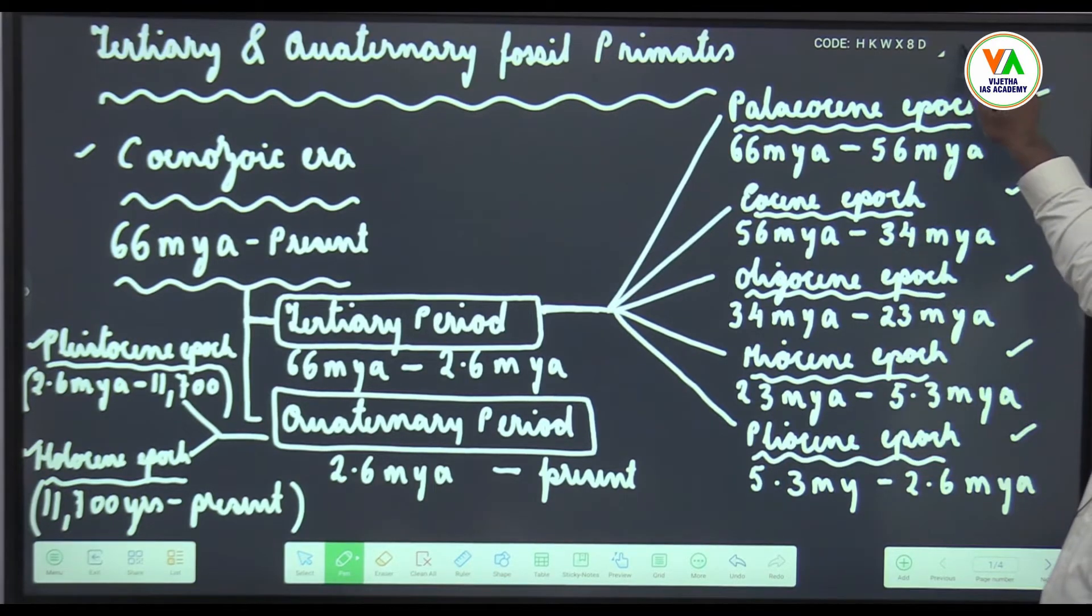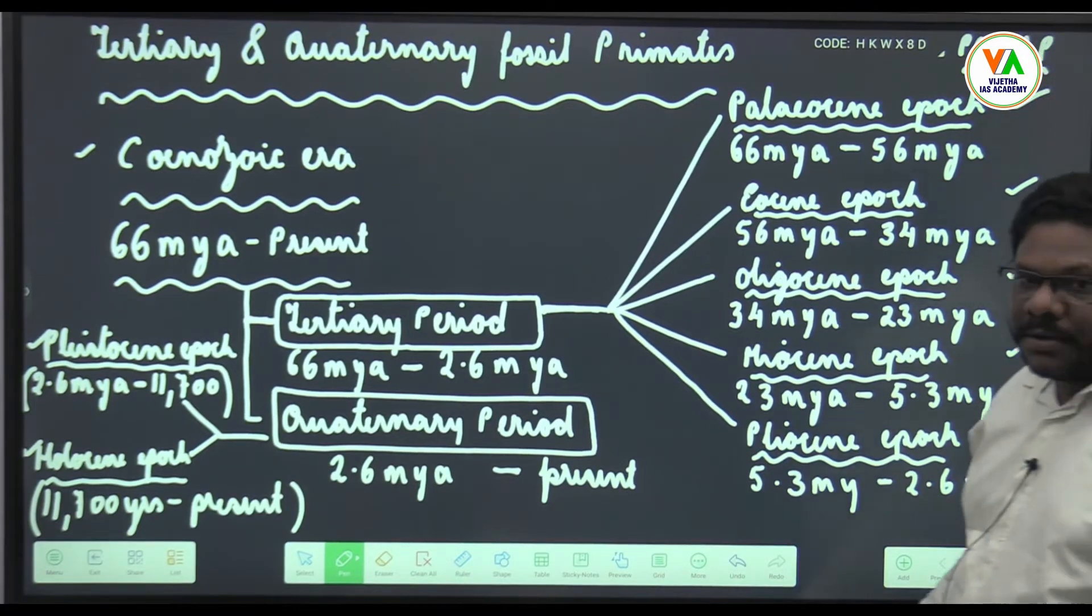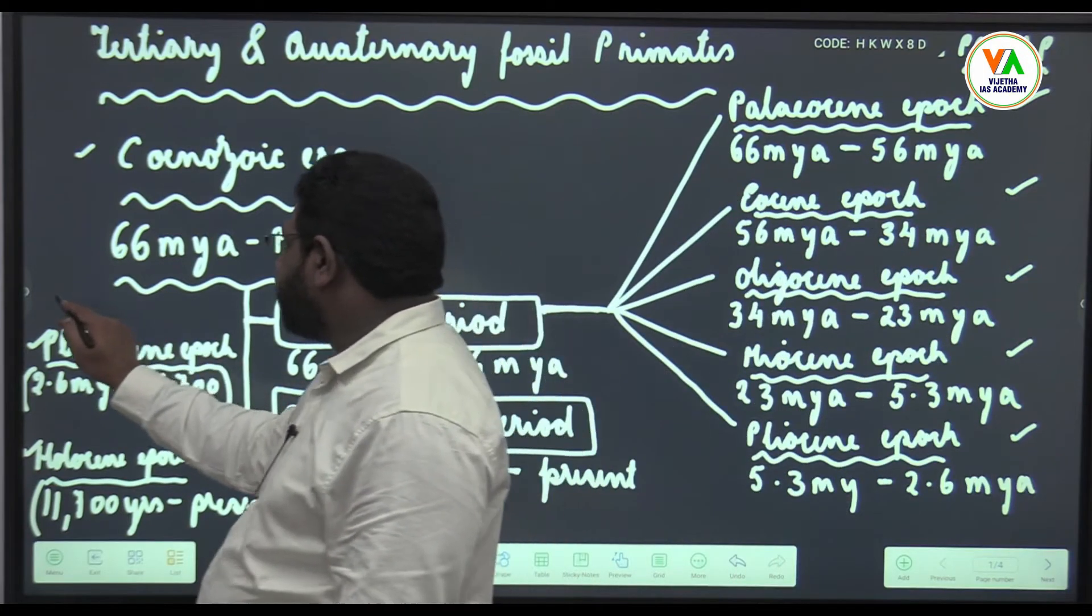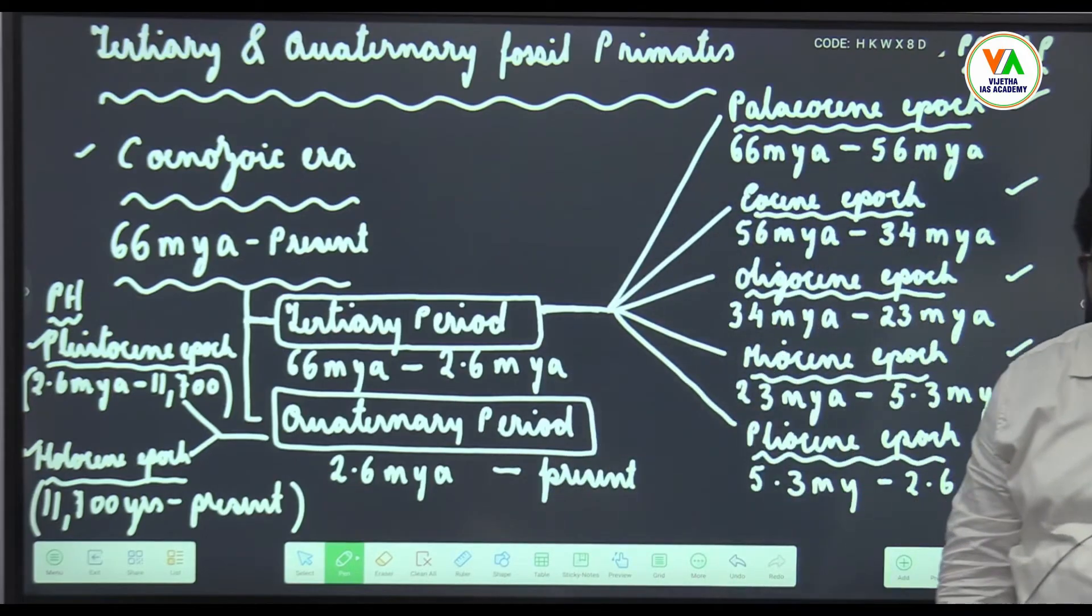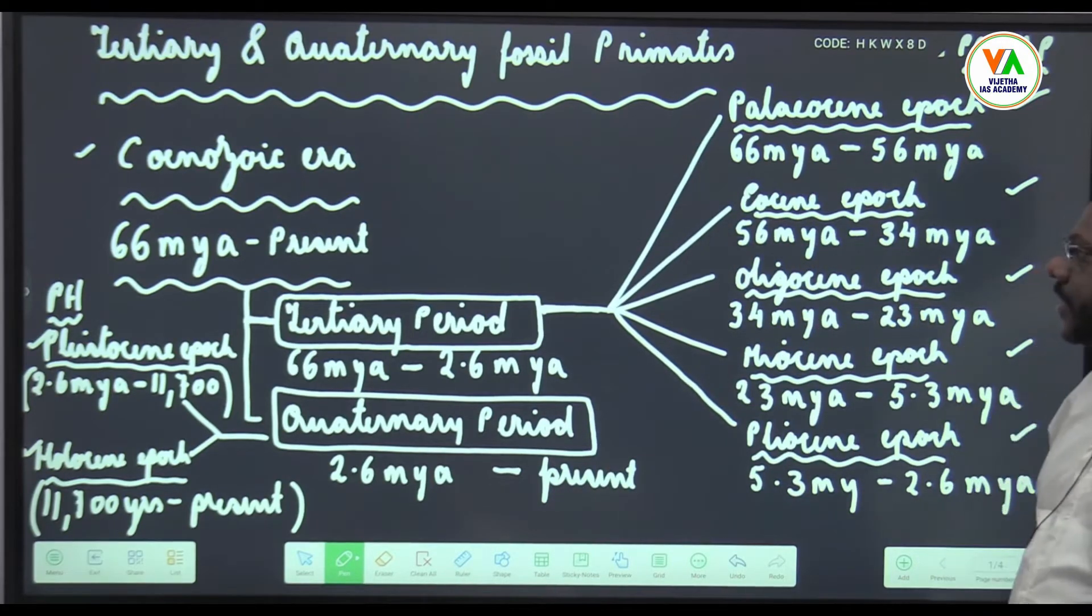If you want to remember this, you can write PEOMP. Pliocene comes first followed by Pleistocene. Pleistocene is the great ice age.